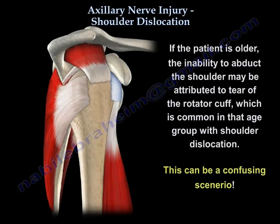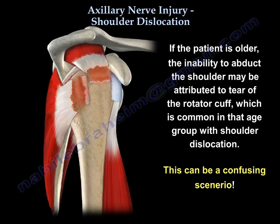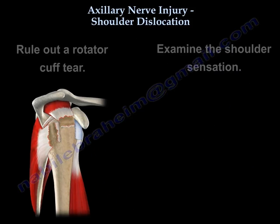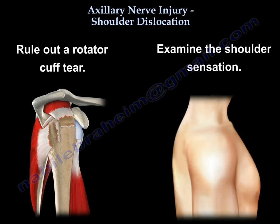If the patient is older, you can attribute inability to abduct the shoulder to a rotator cuff tear, which is common in that age group with shoulder dislocation. That can be a confusing scenario. So you have to rule out a cuff tear and examine the sensation of the shoulder.